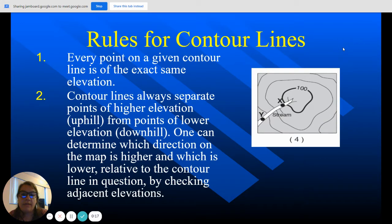The rules for contour lines: we talked about this, that every point on a given contour line is the exact same elevation. So anywhere that you see on this dark line right here, that is going to be an elevation of 100. I'm not sure if it's talking about kilometers or feet or miles or meters, so we're just going to say 100.